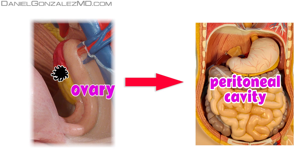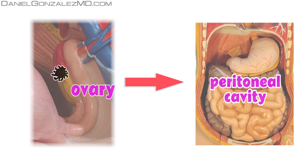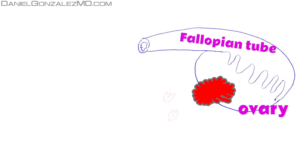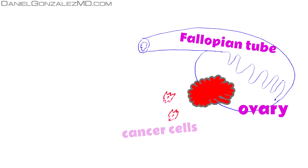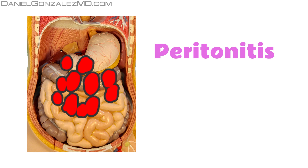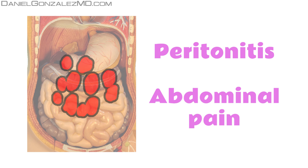Ovarian cancer can spread through the peritoneal cavity, that is, a virtual cavity lined by the peritoneum to enable frictionless movement of the abdominal viscera. If cells of ovarian cancer enter the peritoneal cavity — directly because the tumor has grown and broken the peritoneum covering the ovary — these cancer cells start to swim and can be placed anywhere in the abdomen. Groups of cells will grow and will even cause symptoms of peritonitis with diffuse abdominal pain.